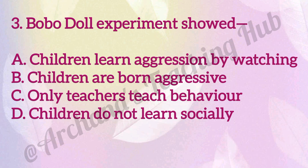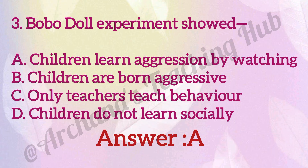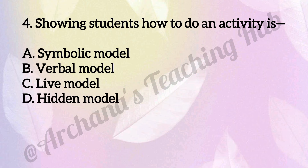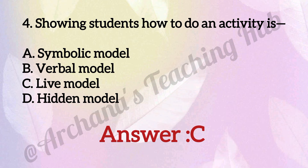Question three: Bobo Doll experiment shows — A) children learn aggression by watching, B) children are born aggressive, C) only teachers teach behavior, D) children do not learn socially. Answer is A, children learn aggression by watching. Question four: showing a student how to do an activity is — A) symbolic model, B) verbal model, C) live model, D) hidden model. Answer is C, live model.